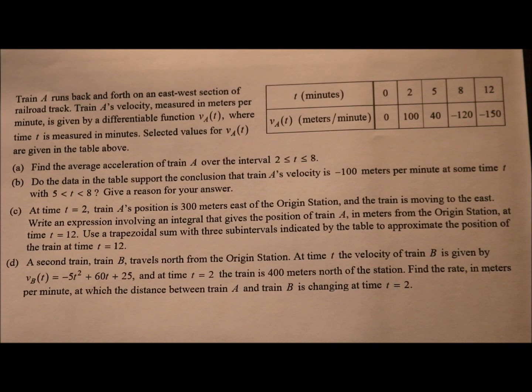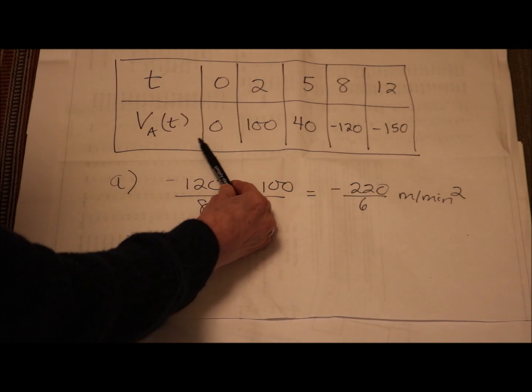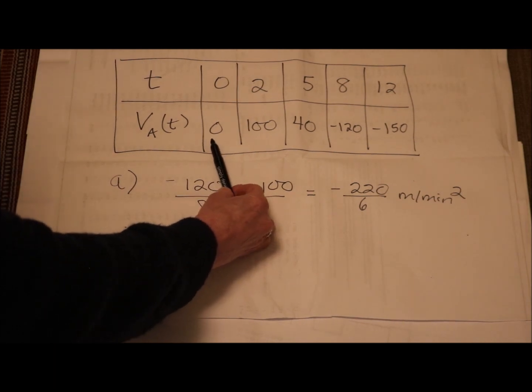Part b. Do the data in the table support the conclusion that train A's velocity is negative 100 meters per minute at some time t, with 5 is less than t is less than 8? Give a reason for your answer. Well, this is one of our existence theorems, isn't it? Yeah, I think it is. I think if you just think about it, if I know, in fact, I'm told that v sub a is a differentiable function.